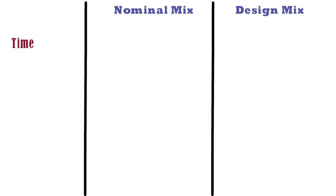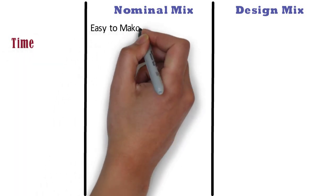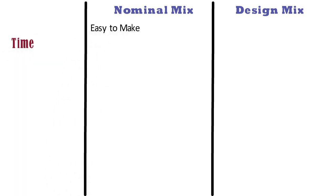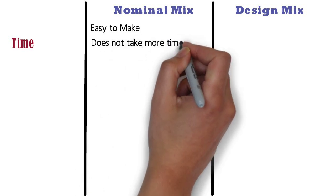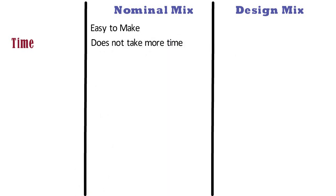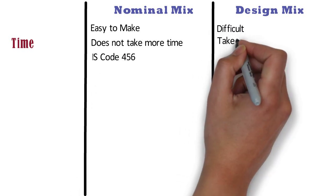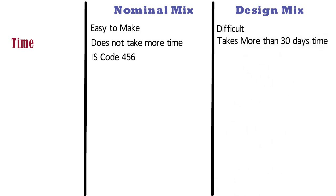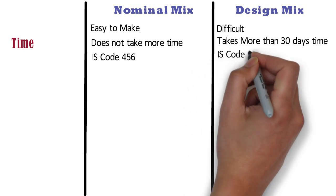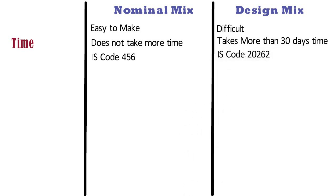Time: Nominal mix is easy to make at the construction site and does not take much time to decide proportions, because the proportions are already given in IS 456. Whereas design mix is very difficult and its process takes more than 30 days to find out the most suitable mix for a project. For design mix, IS 10262 shall be followed.